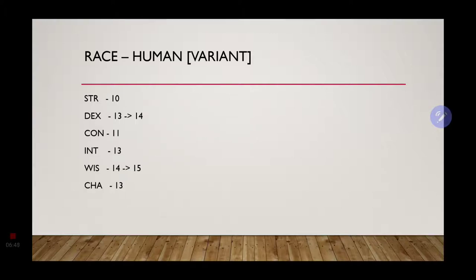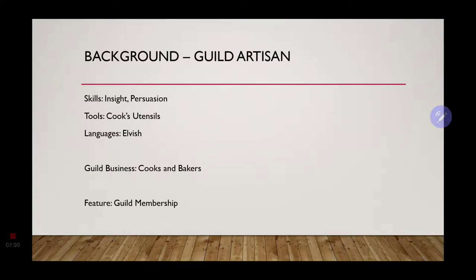Going on, we have our stat increases, so we'll go ahead and bring dexterity up to a 14 and wisdom up to a 15. Now for our background. The only one I could find that would give us what we needed was the guild artisan, which, looking at the guild artisan in the player's handbook, you would think Gordon Ramsay isn't an artisan, he is the master, he is the guild leader. I would agree. Luckily, there is also a variant guild artisan where you are basically the one in charge. But we're going with the guild artisan because it gives us what we need.